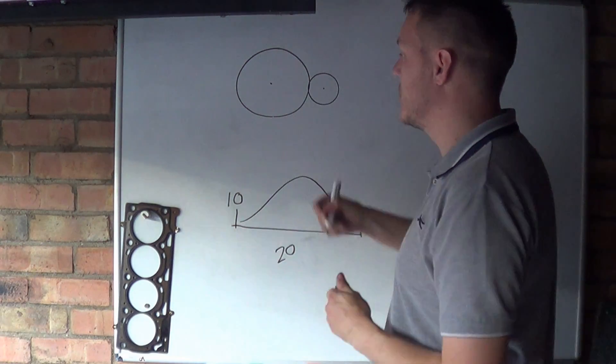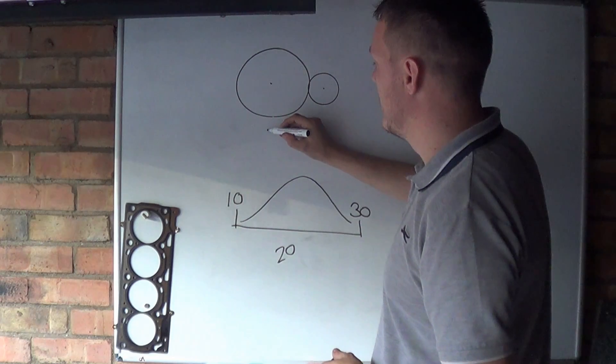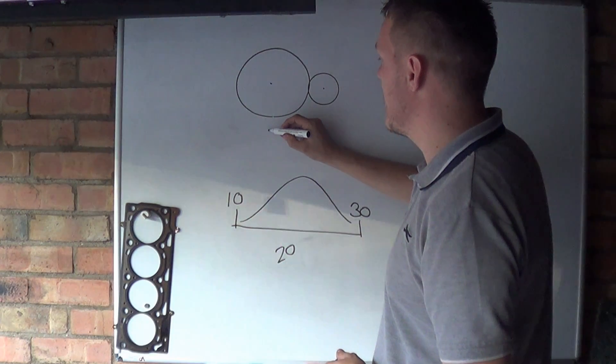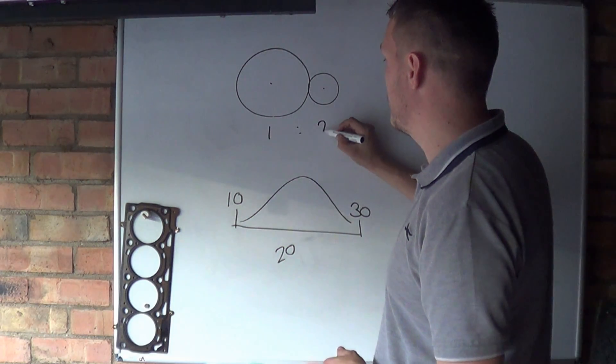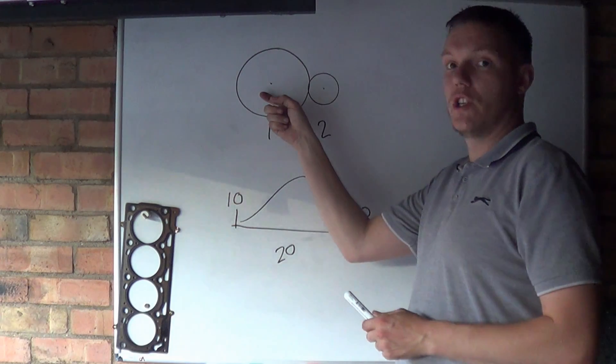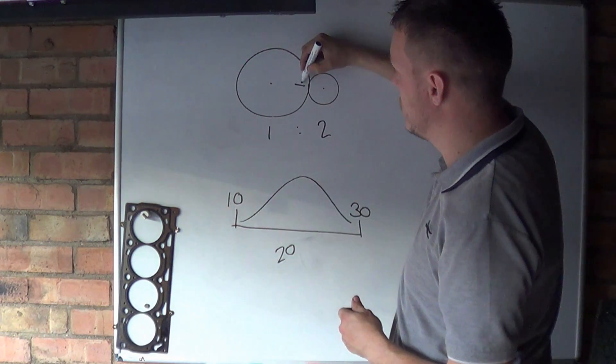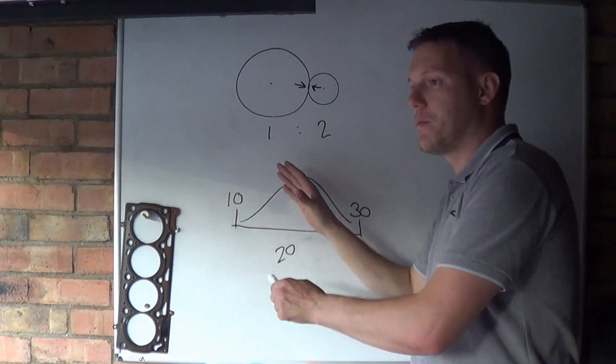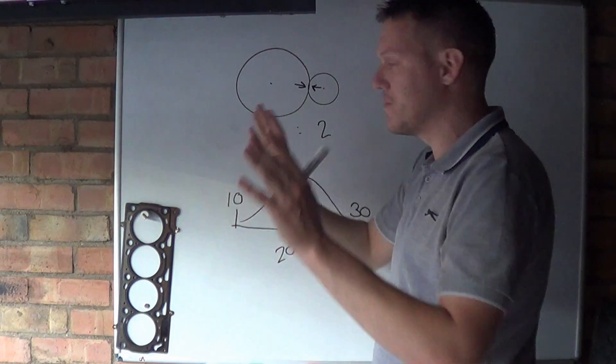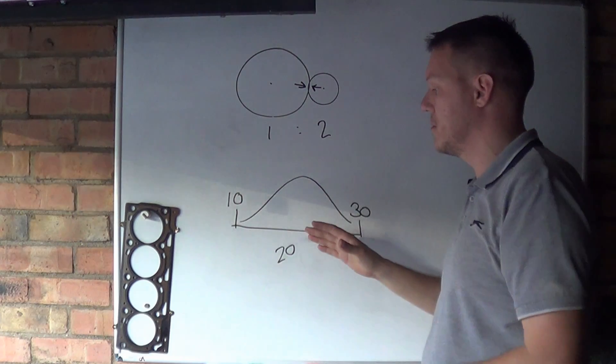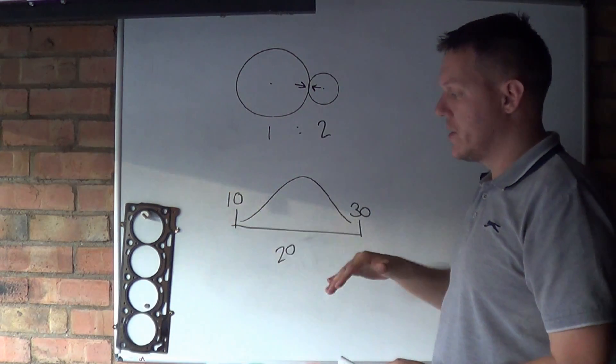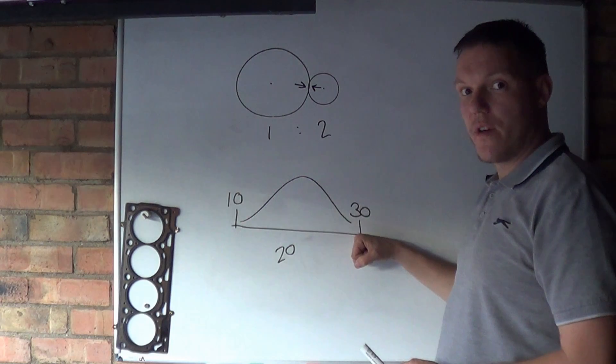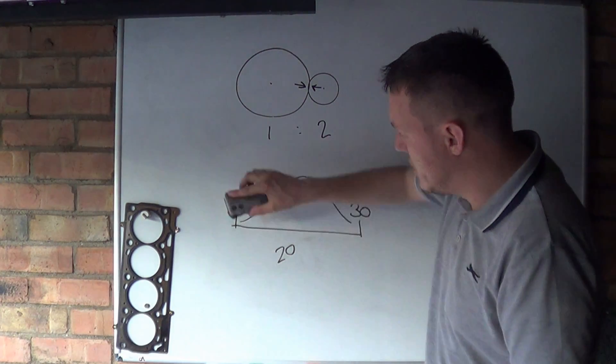We'll just say that this is a one-to-two ratio. Every time this one turns around all the way around once, this little bugger has to turn around twice. Now these aren't proper ratios, but it doesn't matter because I'm just explaining how the principle works.